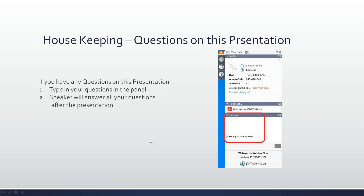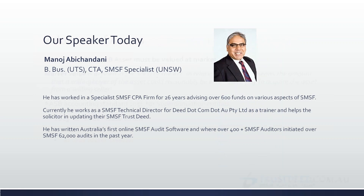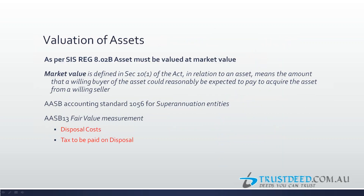Let's look at why we have to value an asset. We're looking at SIS regulation 8.02B, which says an asset must be valued at market value. Market value is defined by section 10.1 of the act as the amount a willing buyer of an asset would reasonably be expected to pay to acquire the asset from a willing seller.